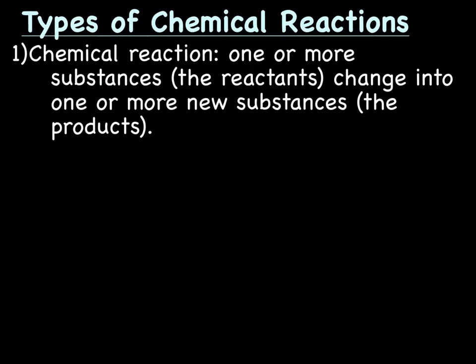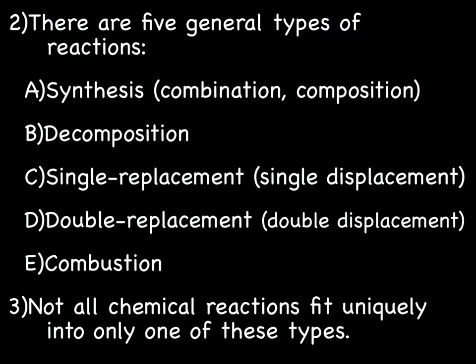Alright, so a quick overview of chemical reactions — types of chemical reactions. If you guys remember, the definition of a chemical reaction is one or more substances, known as the reactants — that's the stuff you start with — change into one or more new substances, the products, the stuff you end up with. There are five general types of reactions: synthesis, also known as combination or composition; decomposition; single replacement, also known as single displacement; double replacement, known as double displacement; and combustion.